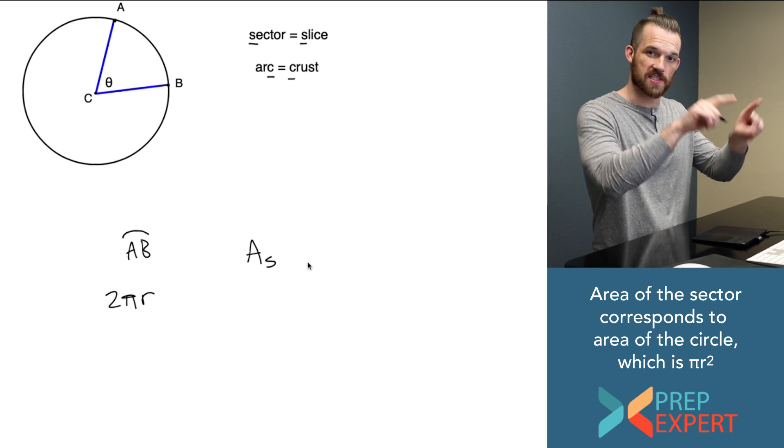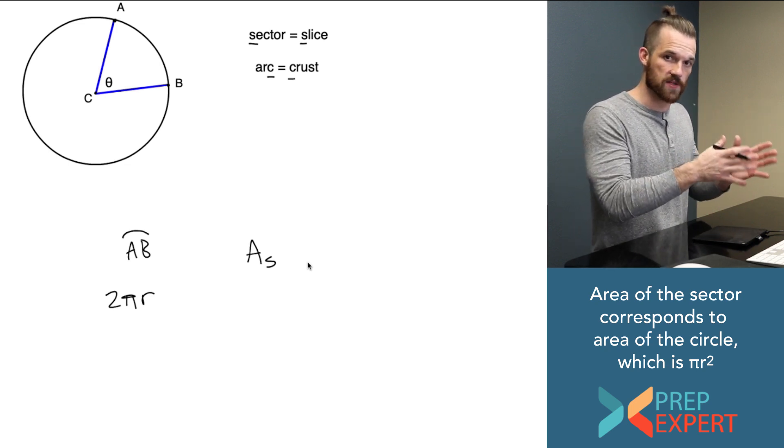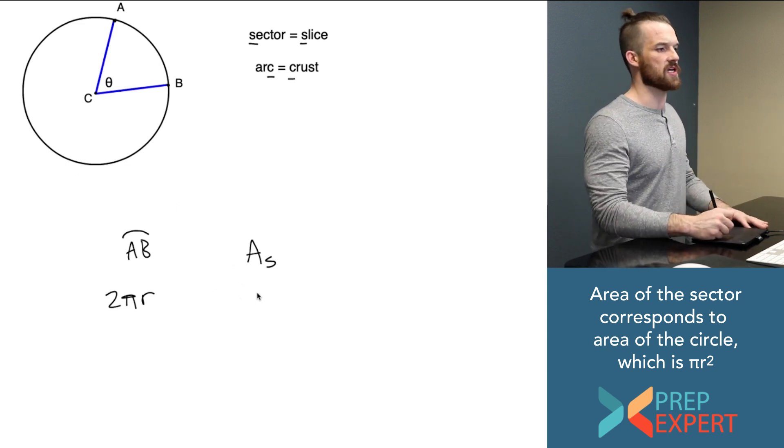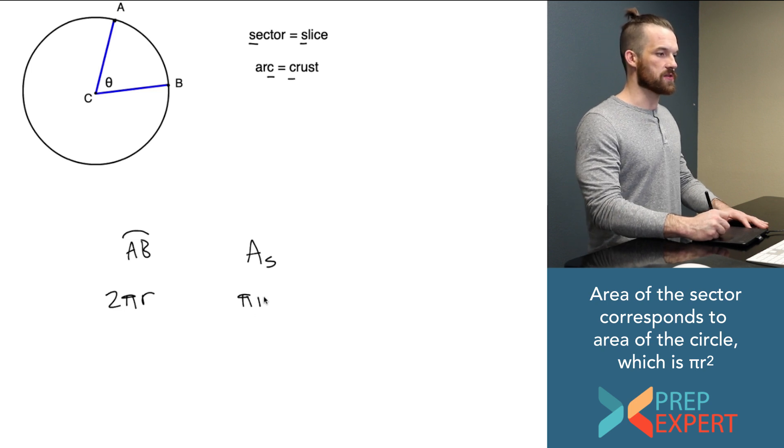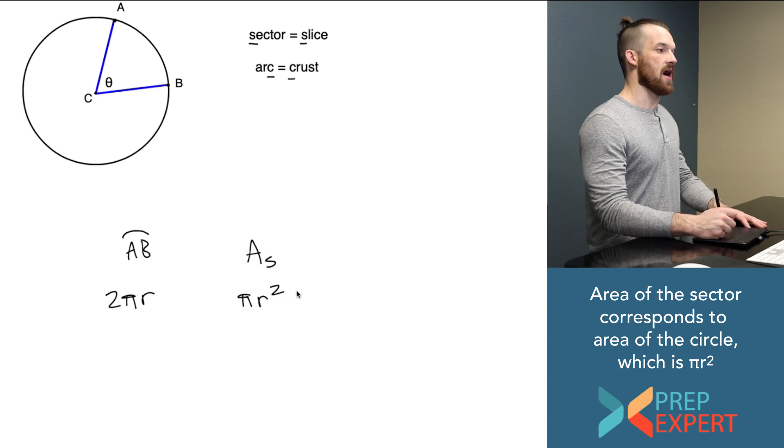If I expand my slice until it's the whole pizza, then the area of the slice has become the area of the whole pizza. But the formula for the area of a circle is πr². So again, I have a formula for that, πr². Awesome.